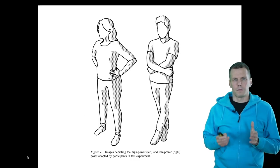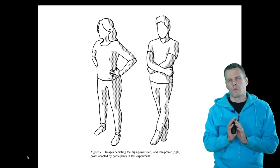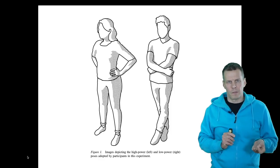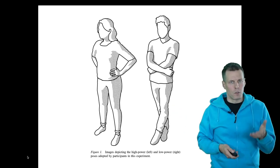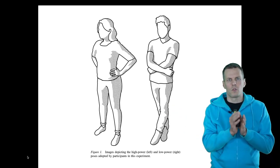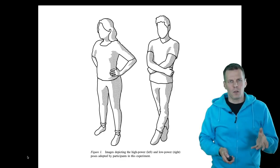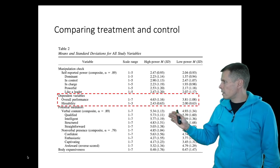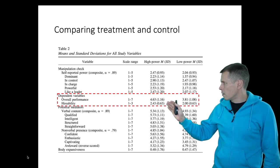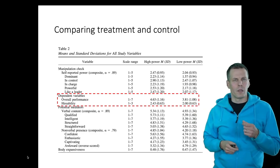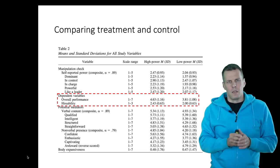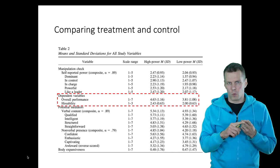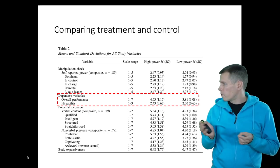When you evaluate these kind of studies or read these kind of studies, the first thing you need to look at is: is there a difference between the treatment and control group after the treatment? So here the treatment was what kind of pose you held before you gave the job talk. Then you gave a job talk, you were coded, and those codings or ratings were then compared. They calculated these average values for the ratings, and we can see higher values in overall performance and hireability for high power versus low power. You typically find a table like this in experimental studies.